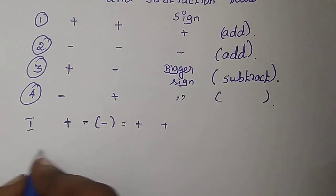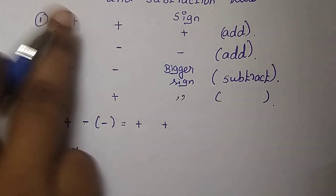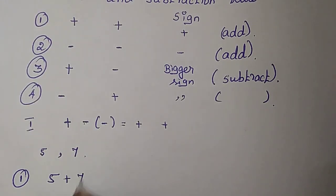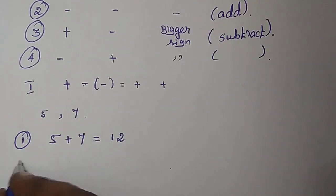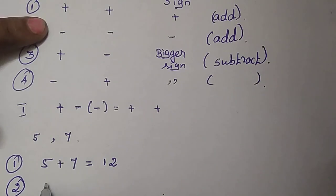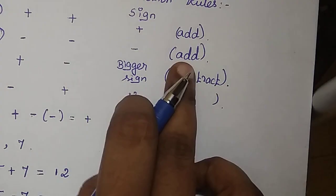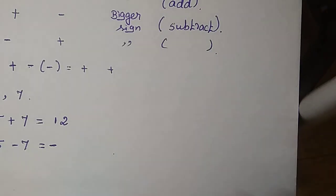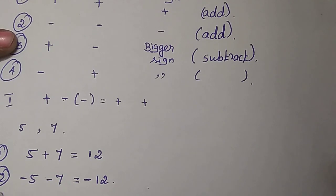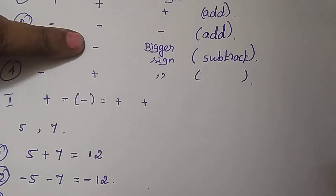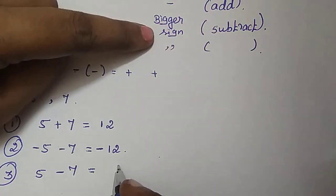For example, we choose two numbers: 5 and 7. The rule is plus 5 and minus 7. Now the bigger number's sign is taken.